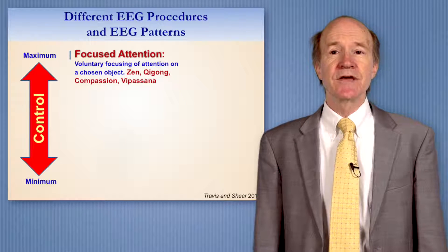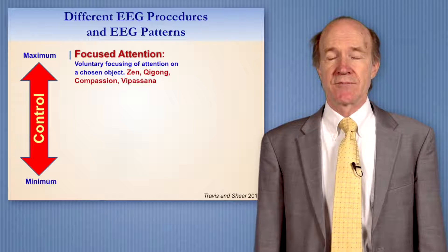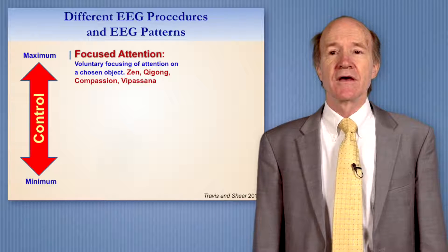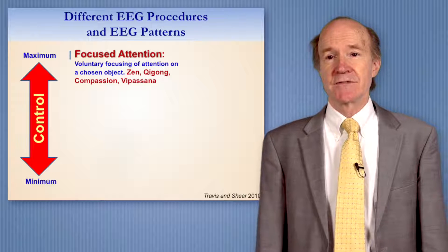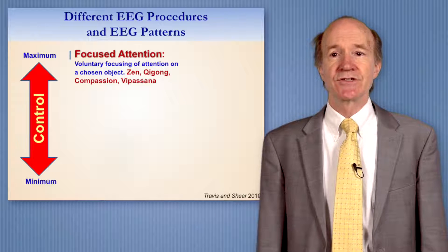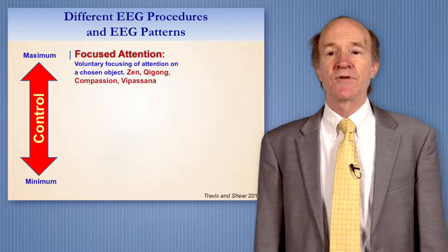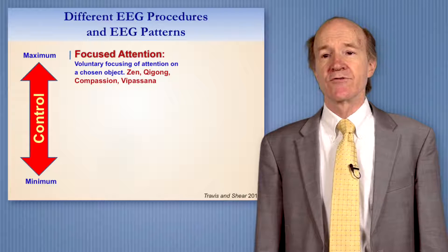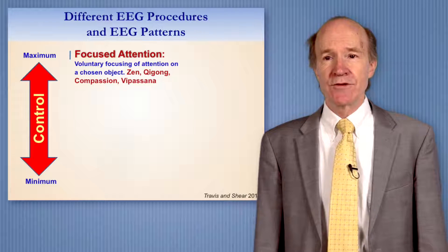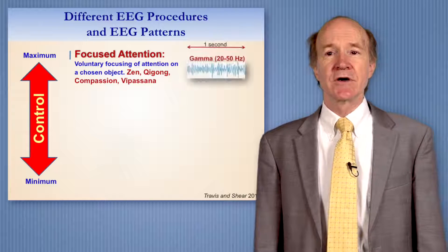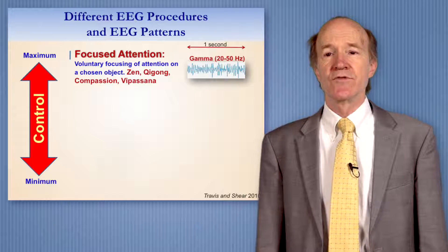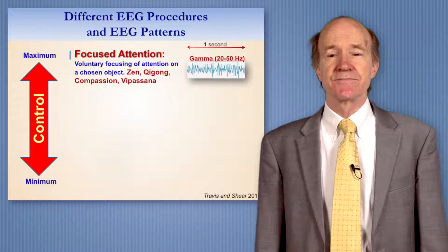Focus attention meditations focus the mind — they keep the mind from moving. For instance, in Zen meditation you keep the attention in the center of the brain, or in Vipassana you focus on the breath. Whenever you focus the mind, you see gamma EEG moving 20 to 50 times per second.